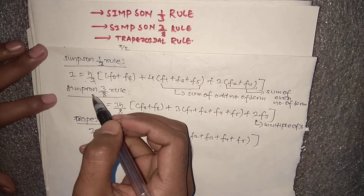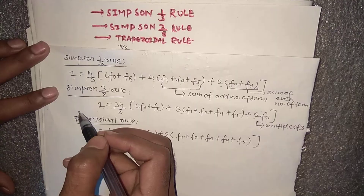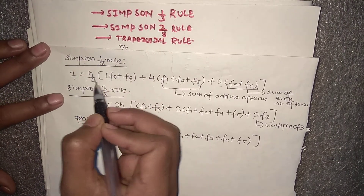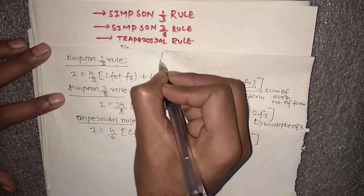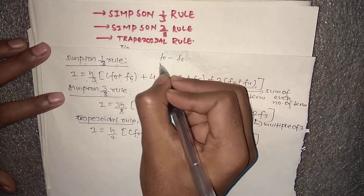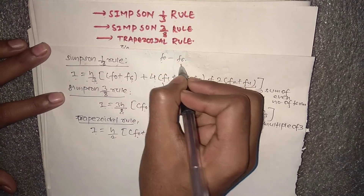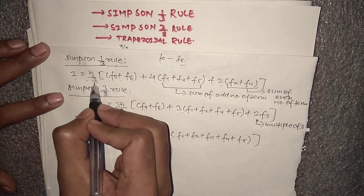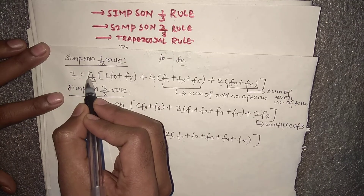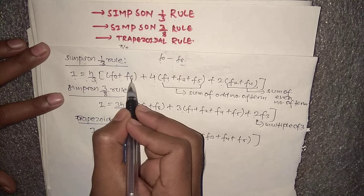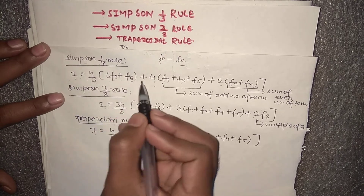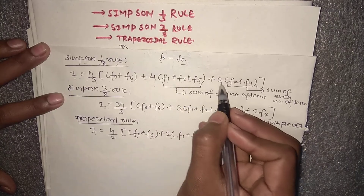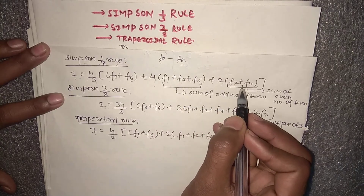Before starting, you should remember some formulas. Here we have the formula for Simpson's 1/3 rule: I is equal to h/3. We have considered values from f0 to f6, where f0 is the first value and f6 is the last value. So in Simpson's 1/3 rule, I equals h/3 times: (f0 + f6) — first term plus last term — plus 4 times the sum of odd-numbered terms, plus 2 times the sum of even-numbered terms.